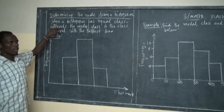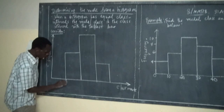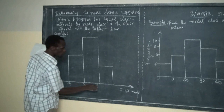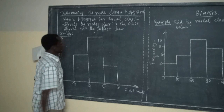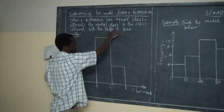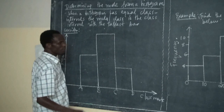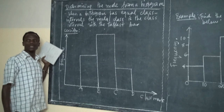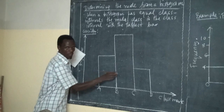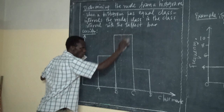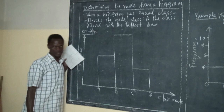When a histogram has equal class intervals, the class interval from A to B is the same as from B to C and from C to D. The modal class is the interval with the tallest bar — when the histogram has equal class intervals, the tallest bar is chosen to be the modal class.